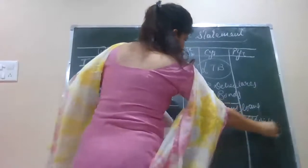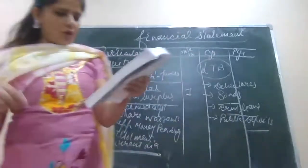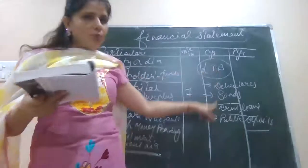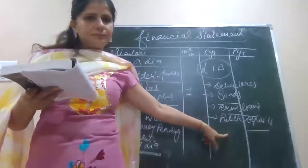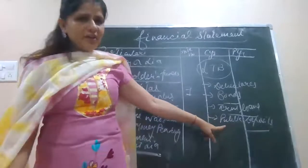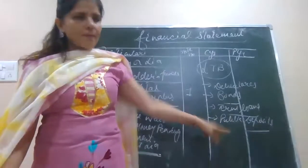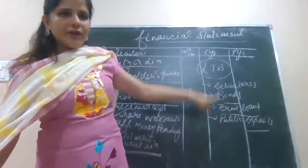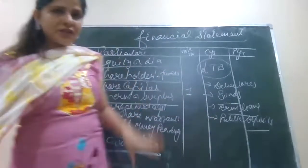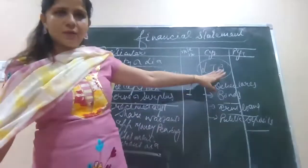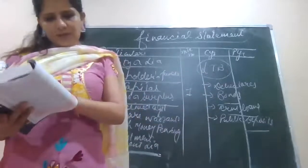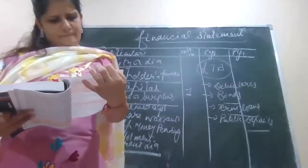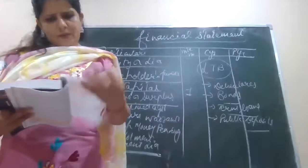Public deposits are also part of your long-term borrowing, along with other loans and advances. So under long-term borrowing you have five categories. The main head is non-current liability and the subhead is long-term borrowing — this point you have to keep in your mind. So long-term borrowing ends here.